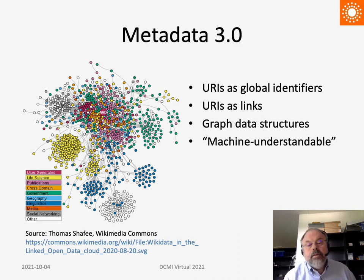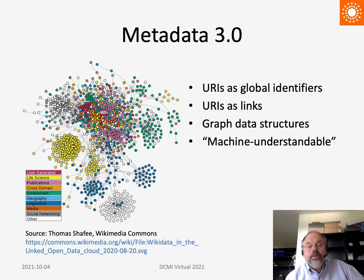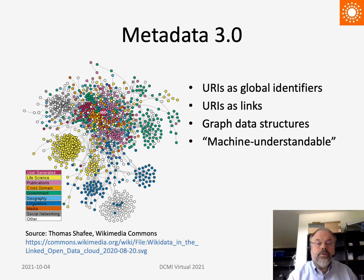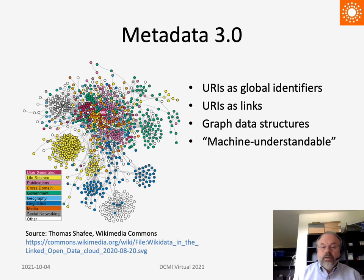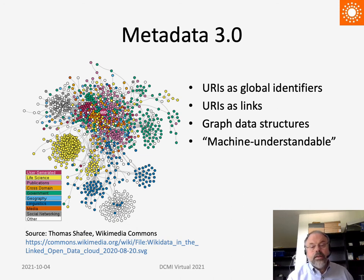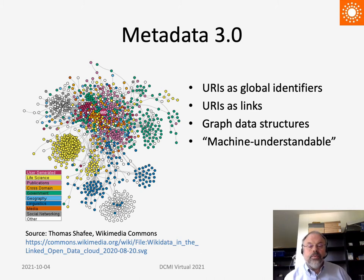Metadata 3.0 uses web addresses, also known as URIs, both as identifiers for things and as links between those things. Metadata 3.0 is sometimes called machine-understandable, because its data structures support simple forms of logical processing.